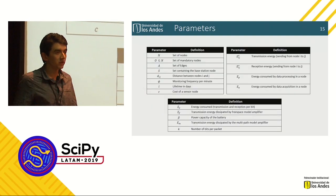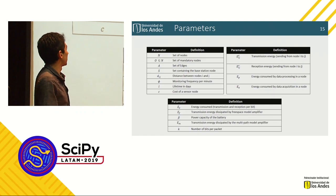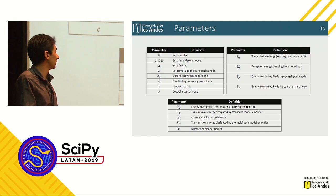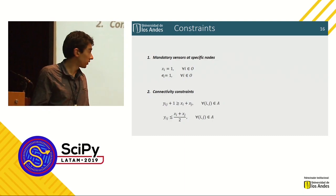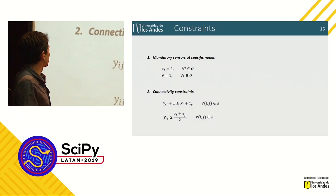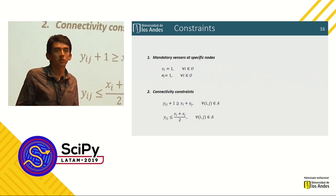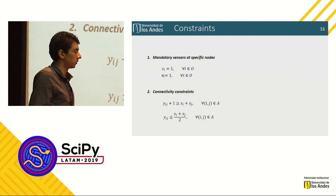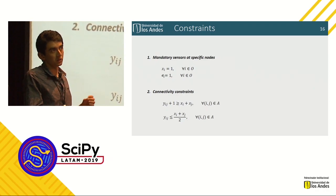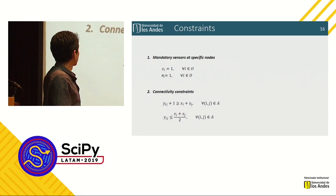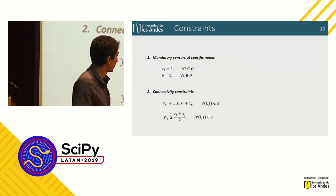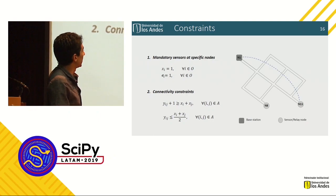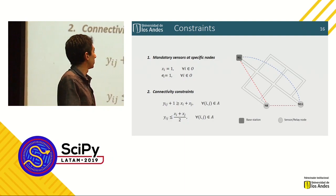We have parameters about the energy consumption of the nodes, and other parameters such as the set of nodes, distance between nodes, and monitoring frequency per minute. We define several constraints. The first constraint ensures that mandatory sensors will be deployed in the mines, because in Colombia, according to law, it is mandatory to deploy nodes in certain parts of the mine such as the work front. The second constraint is the connectivity constraint, ensuring that only nodes with line of sight can communicate. For example, node 1 and node 11 can communicate, but node 8 cannot communicate with node 1 or node 11.